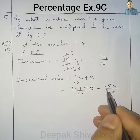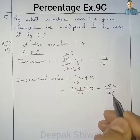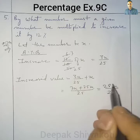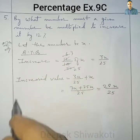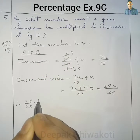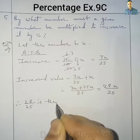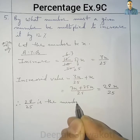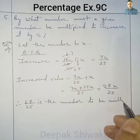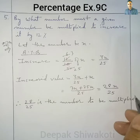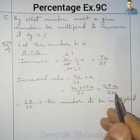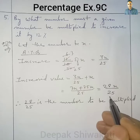From this expression we can understand that the fraction 28 by 25, when multiplied with x, will increase the number by 12%. Therefore, 28 by 25 is the number to be multiplied. So the answer is 28 by 25.